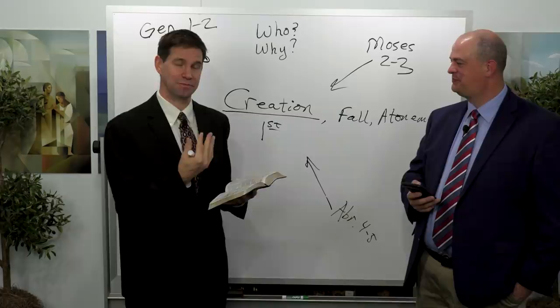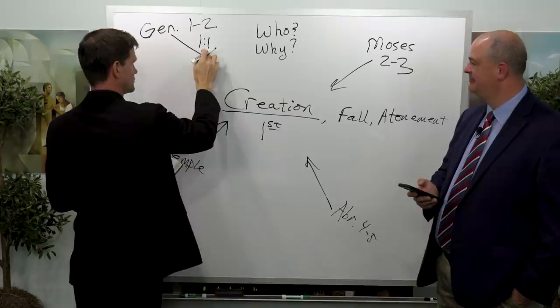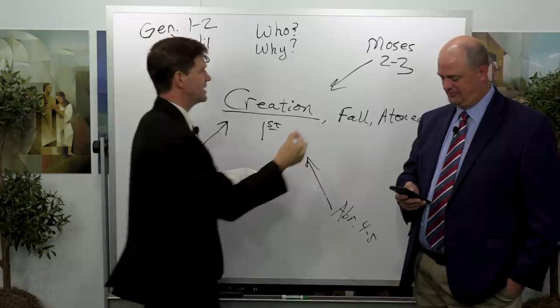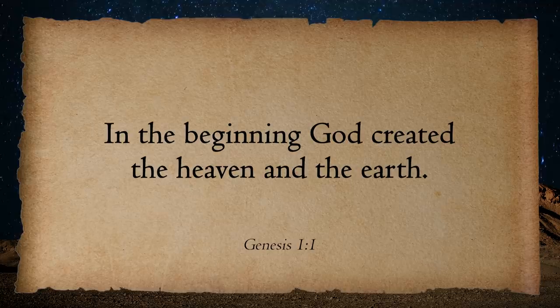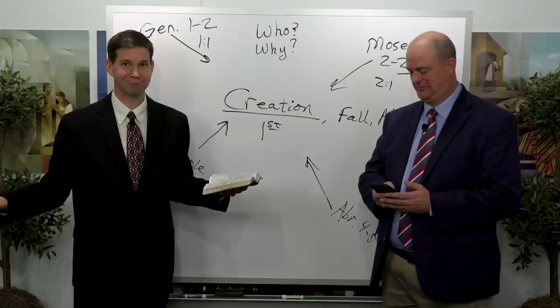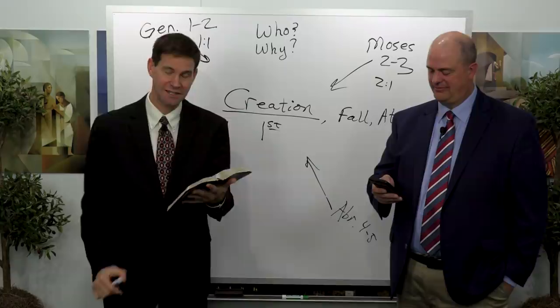Let's model something for you. There's the account in Genesis chapter 1 verse 1 — we're just going to do one verse as an example. You get the biblical account that Joseph Smith had to work with originally when making his JST modifications, and contrast that with Moses chapter 2 verse 1. The biblical account is simply: 'In the beginning God created the heavens and the earth.' That's what Joseph is starting with.